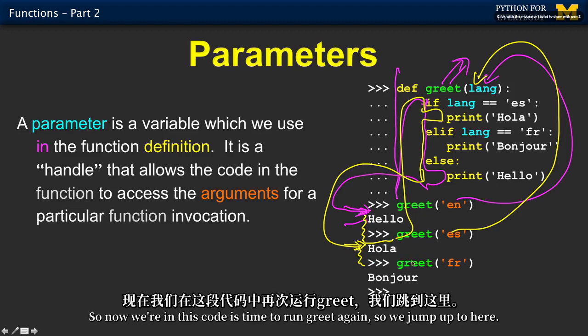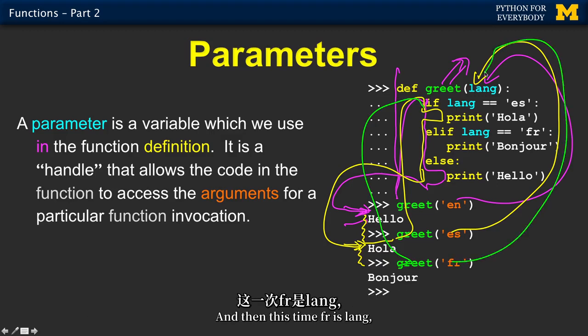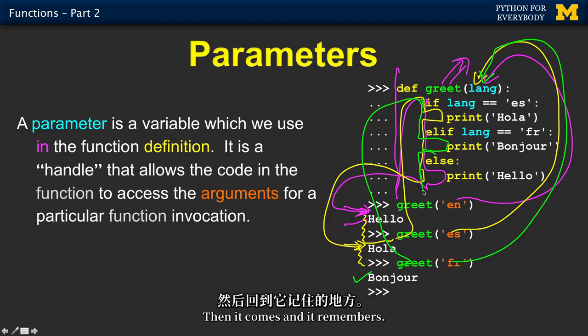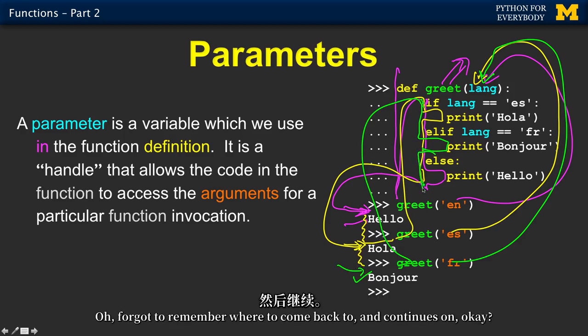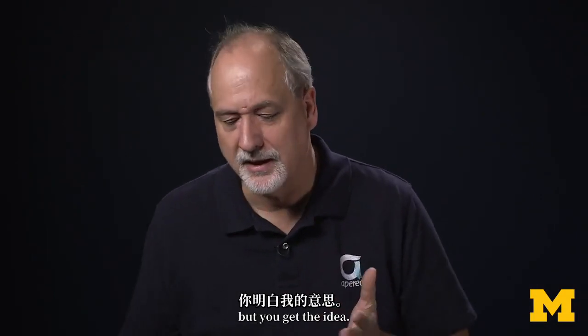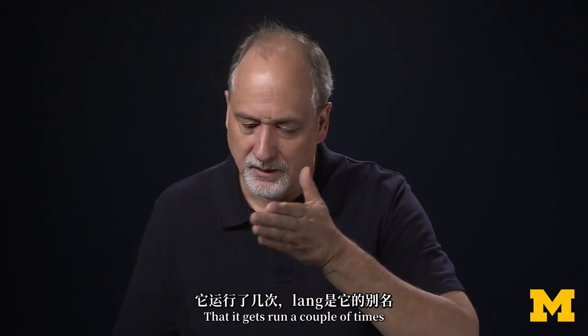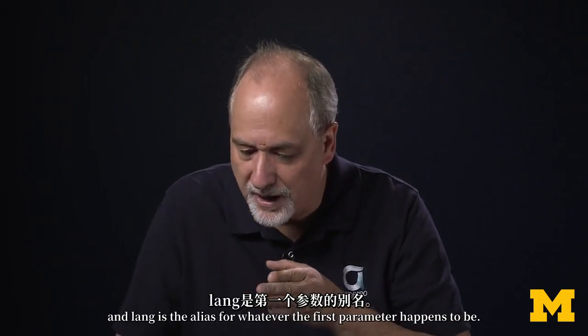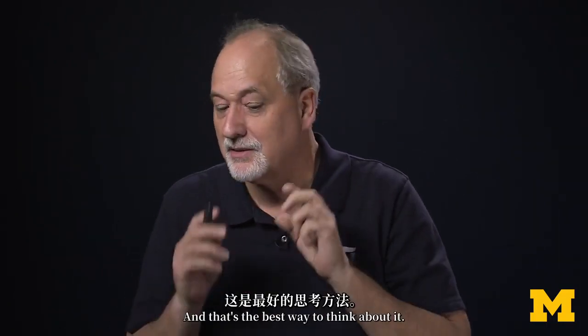Jump up to here. And then make es this time be what lang means. And so now lang is es. So this is true. We run that code. We come out. And we print out hola. And then we go back to where we remembered before. Then we continue on. Come to this code. So now we're in this code. It's time to run greet again. So we jump up to here. And then this time fr is lang. And so it runs here. That's false. This is true. So it prints that out. Prints out bonjour. Then it comes and it remembers. Forgot to remember where to come back to. Continues on.